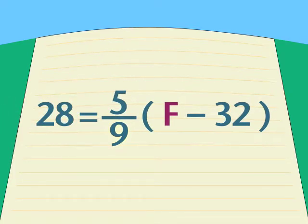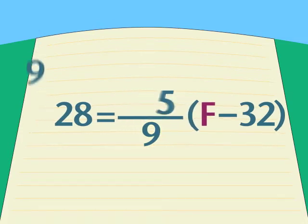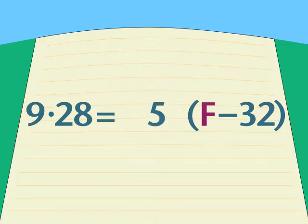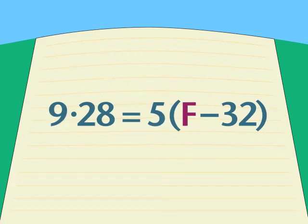First, simplify the fraction. The only denominator is 9, so the least common denominator is 9. We multiply both sides by 9, and then cancel out the fraction. Now what? We saw how to deal with what we have left in the module on harder linear equations. You can review it if you have to.